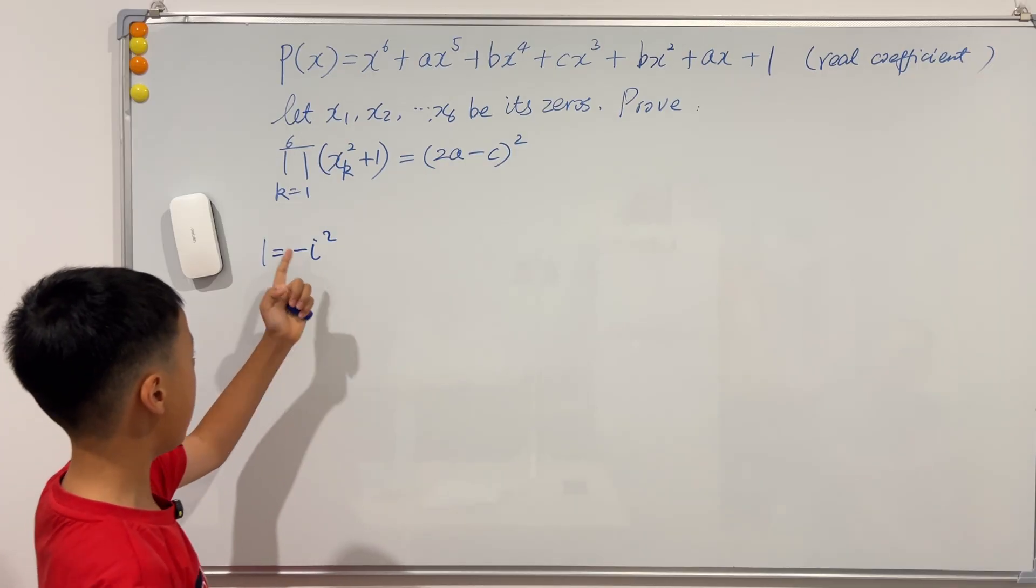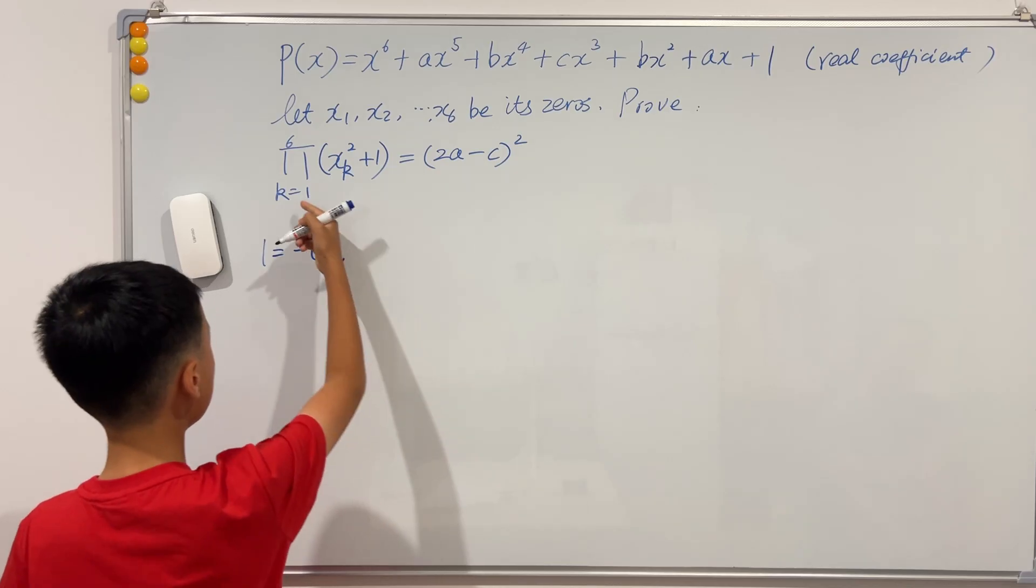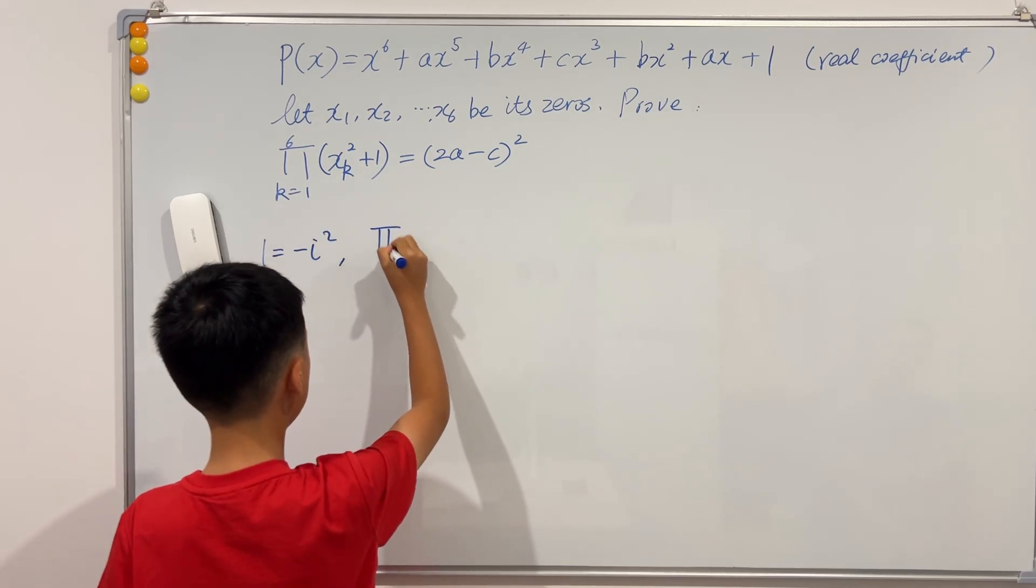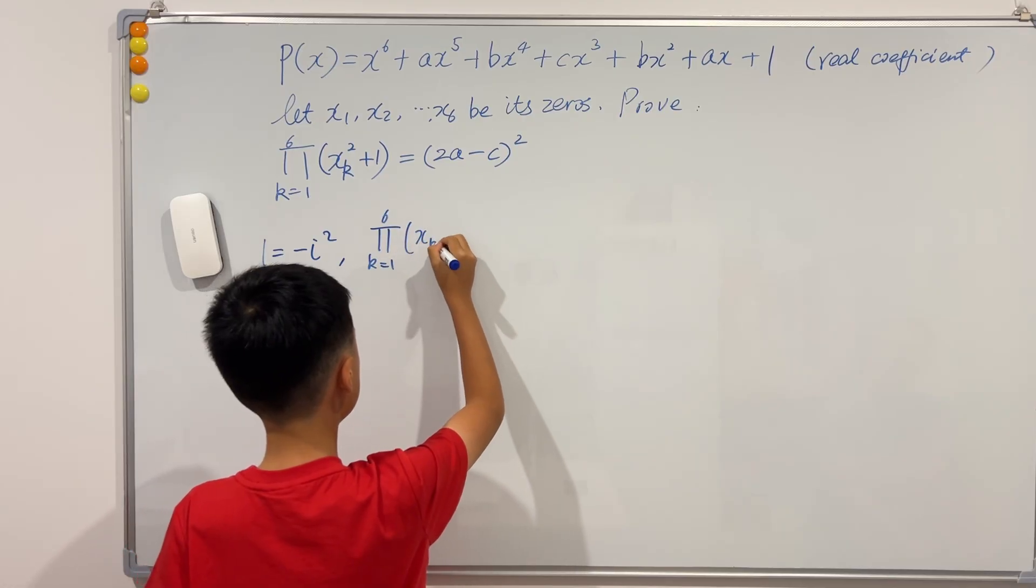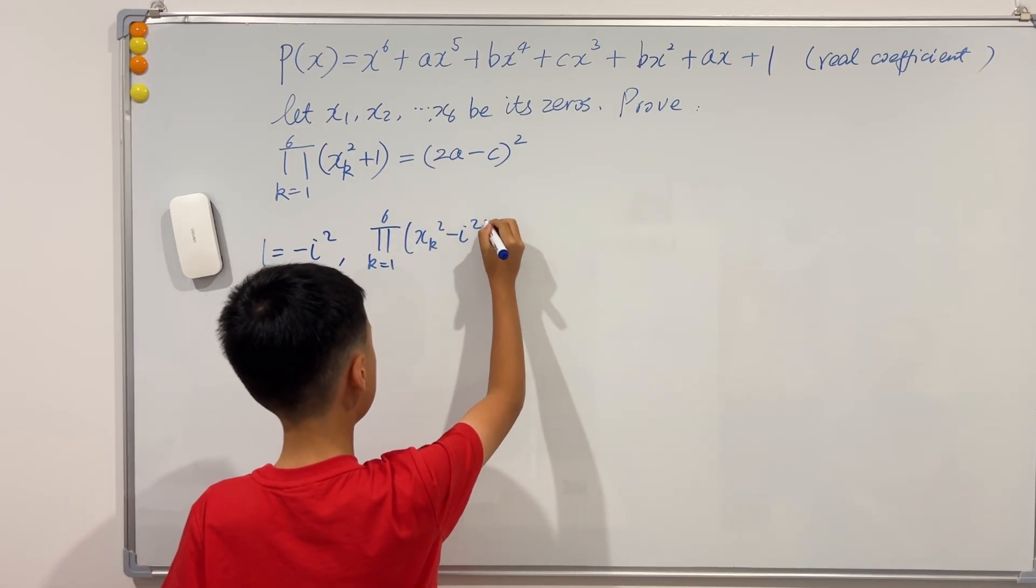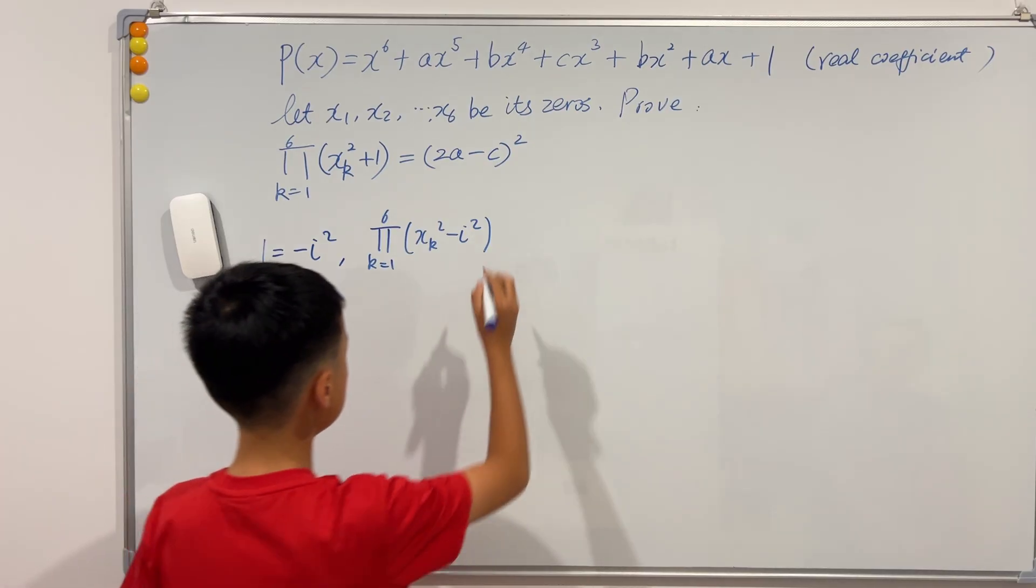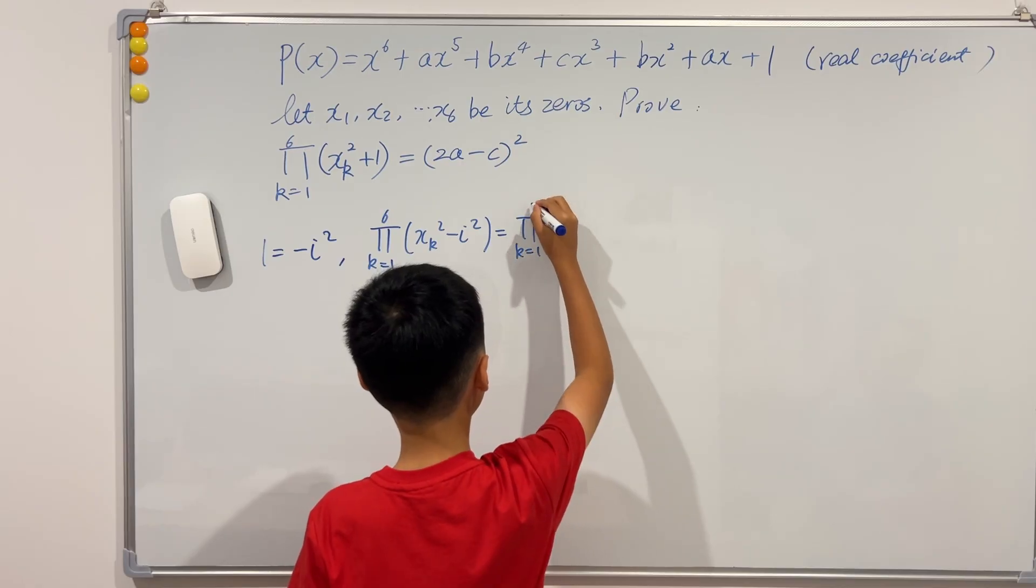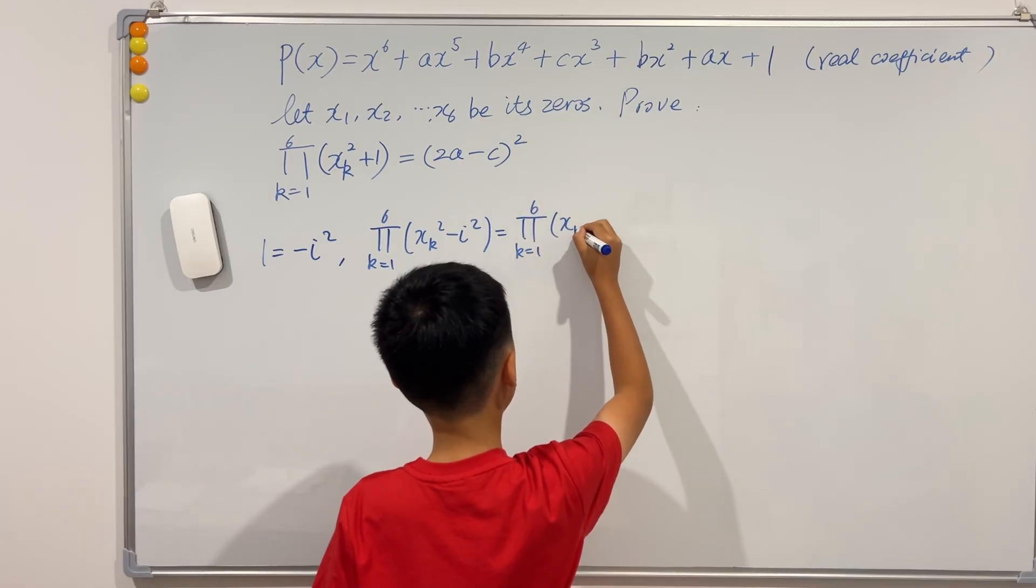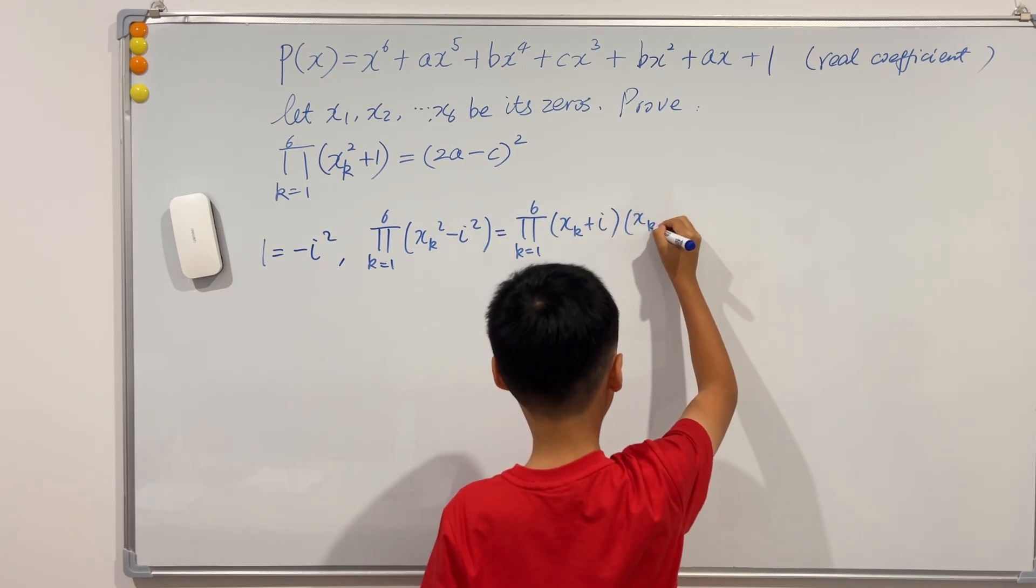So now since it's negative i squared, then we can easily factorize this. So this is equal to capital pi, k goes from one to six, of x_k squared minus i squared. And now we can factorize this using the normal ways. Equals capital pi, k goes from one to six, x to the k plus i times x_k minus i.